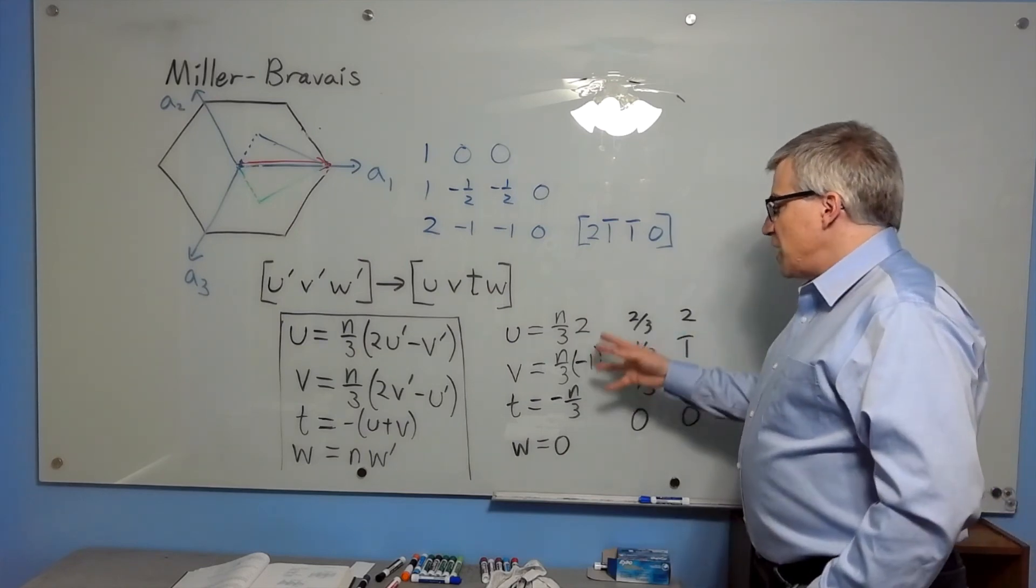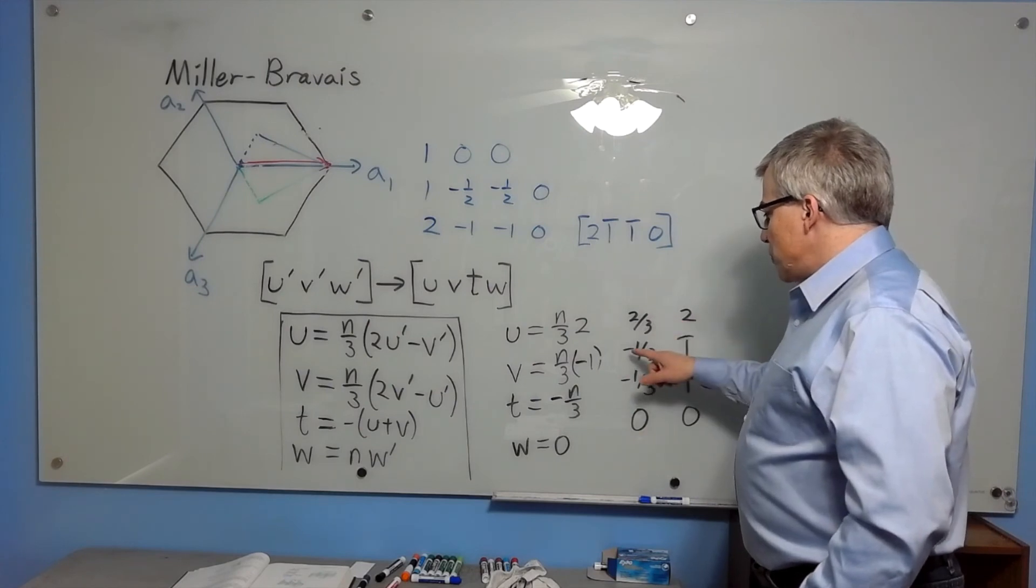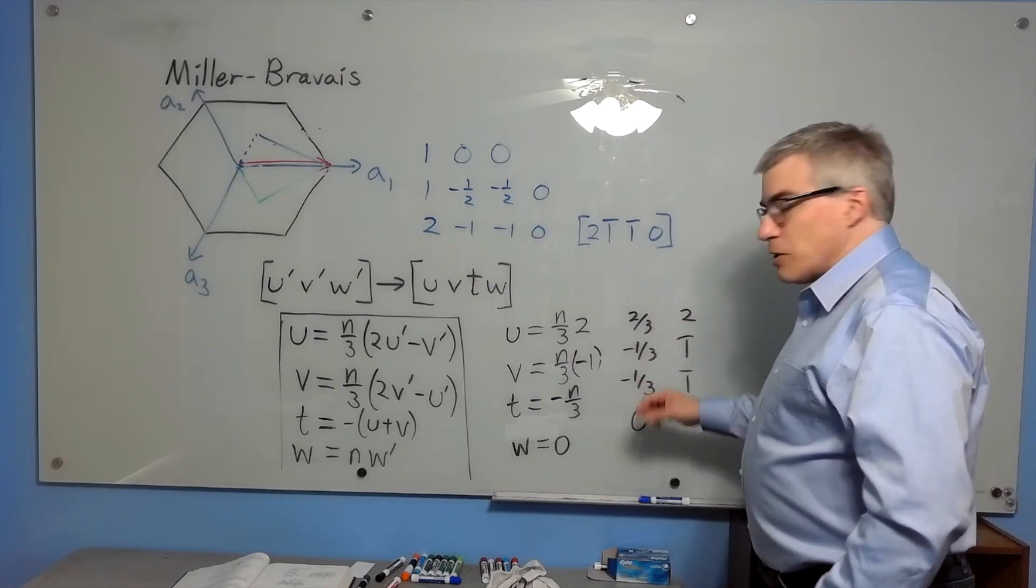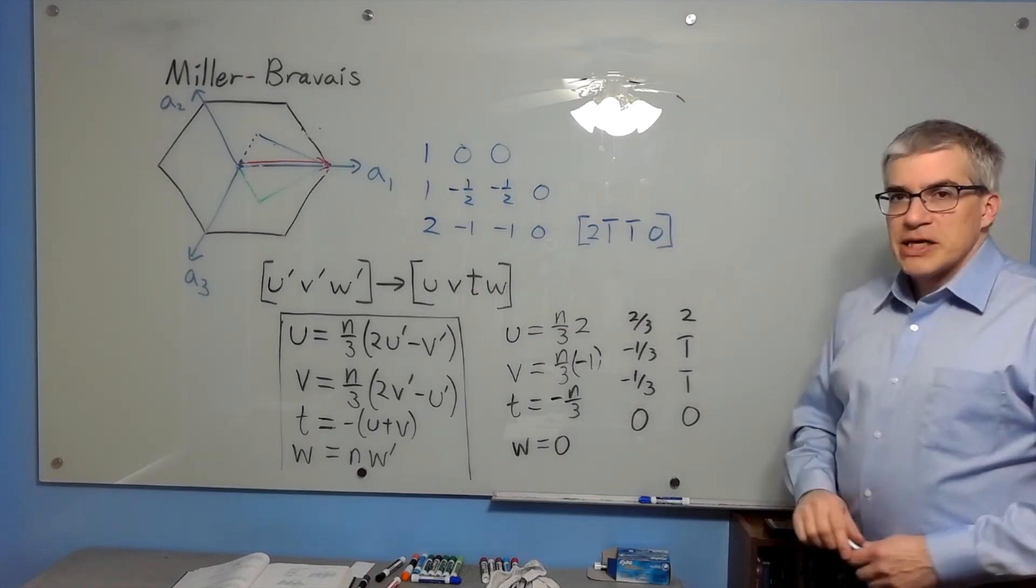From here, the point of the n is to multiply by something to clear out the fraction. Ignoring the n, we have 2 thirds, negative 1 third, negative 1 third, 0. So we multiply by 3, and we get 2, negative 1, negative 1, 0. And again, we get that notation.